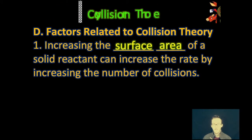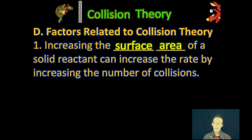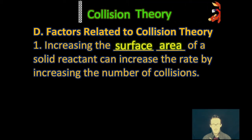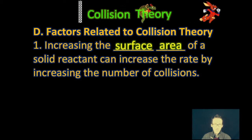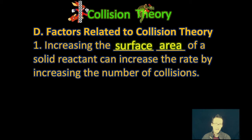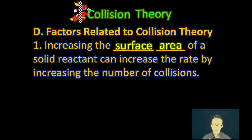There are a couple of things to think about as we consider collision theory. One — when you increase the surface area of a solid reactant, it can increase the rate by increasing the number of successful collisions. This is easy to think about if you recall crushing up a sugar cube to get it dissolved more quickly in water. Surface area is a great way to speed up the rate of reaction by allowing the number of collisions to increase.